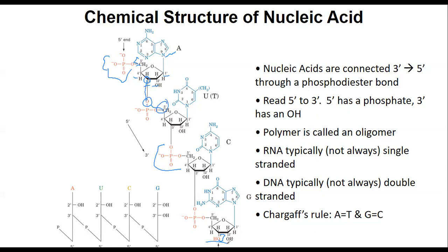RNA is generally single-stranded, as shown here. You can tell it's RNA because at the two prime position there's an OH. RNA can be double-stranded. DNA is usually double-stranded, though it can be single-stranded. If we're dealing with double-stranded DNA, we have to follow Chargaff's rules: A equals T and G equals C. A forms a hydrogen bond with T, and G forms a hydrogen bond with C. Those are our basics of nucleic acids.